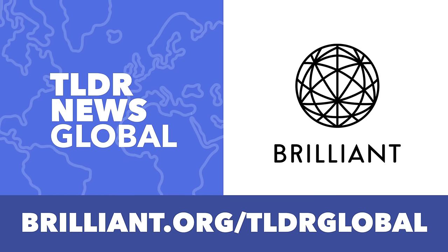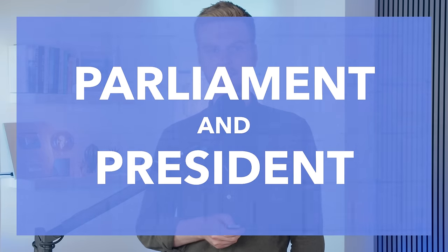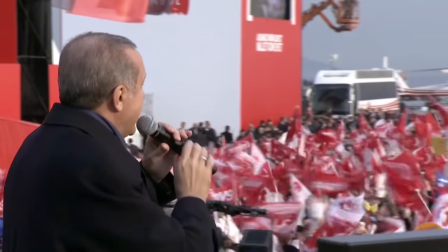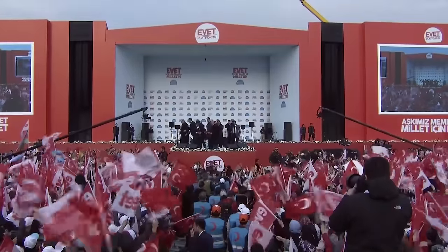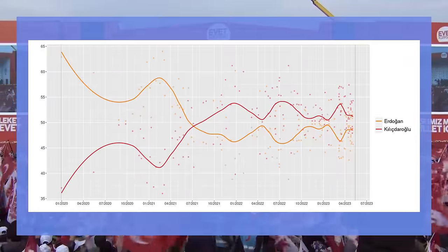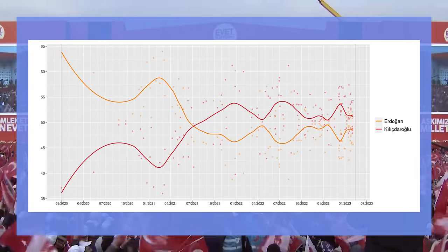This video is brought to you by Brilliant. On Sunday, Turkey will go to the polls to elect both their parliament and president. For the last 20 years or so, Turkey's politics has been dominated by Recep Erdogan and his AKP party, but polls suggest that they could finally be on their way out. So ahead of the elections, we thought we'd take a look at whether Turkey's elections will be free and fair — hint, probably not — and what this means for the opposition's chances on Sunday.